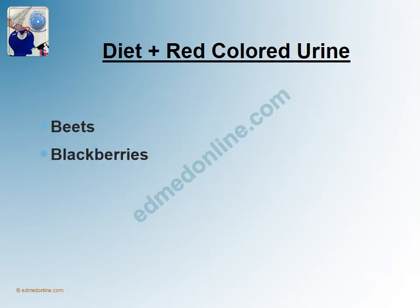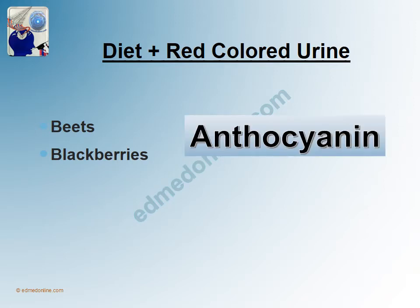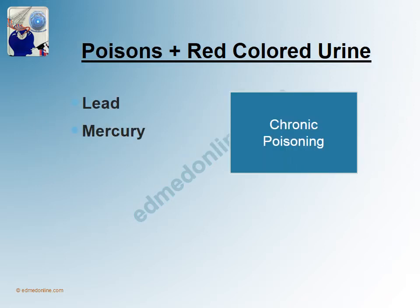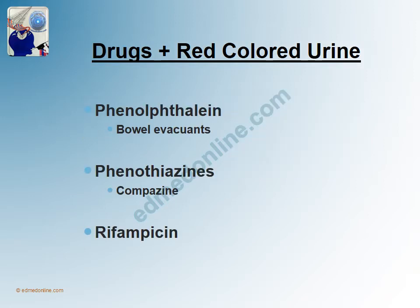Beets and blackberries, because of the presence of anthocyanin as a compound in them, cause reddish discoloration of urine. Poisons like lead and mercury can cause red colored urine, but it has to be necessarily a chronic poisoning. Phenolphthalein, a drug seen in bowel evacuants, phenothiazines, and rifampicin are common drugs which cause red colored urine.